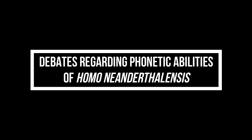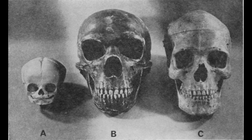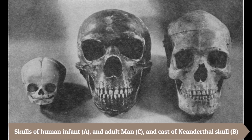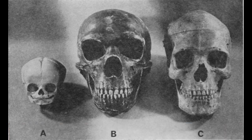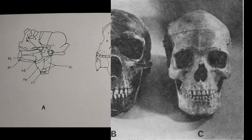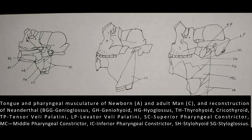Debates regarding the phonetic abilities of Homo neanderthalensis: One of the important studies was conducted by Philip Lieberman and Edmund S. Crellin, based on an earlier study proposing that newborn humans lack the anatomical mechanism necessary to produce speech. Lieberman and Crellin proposed that the supralaryngeal vocal apparatus of Neanderthals was similar to that of a newborn human infant. Referring to the acoustic theory of speech production, this study proposed that the activity of the larynx determines the fundamental frequency of vowel sounds, and that the phonetic qualities differentiating vowels like I and A are determined by the resonant modes of the supralaryngeal vocal tract.